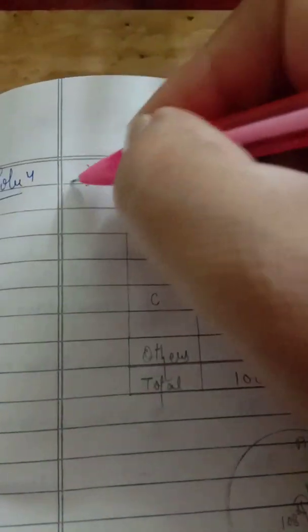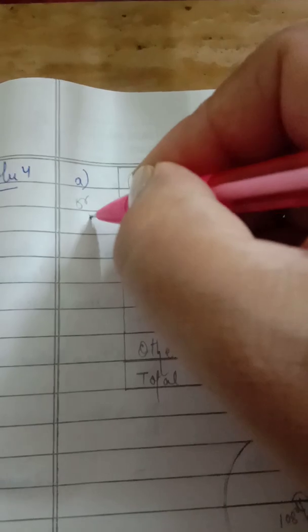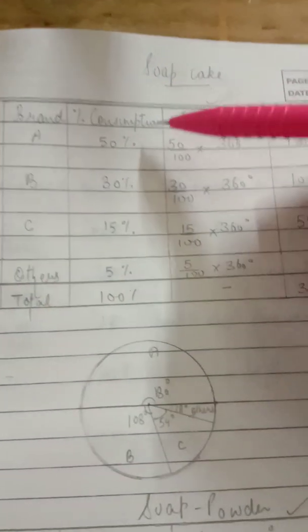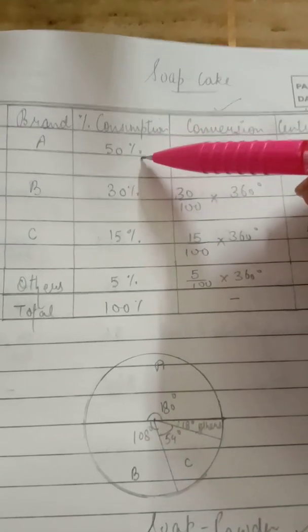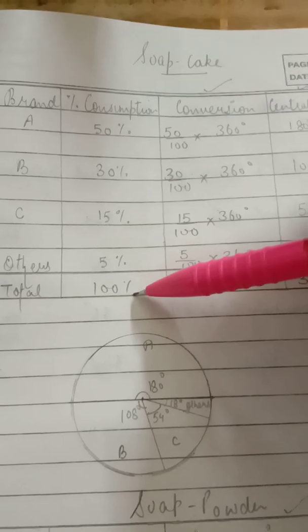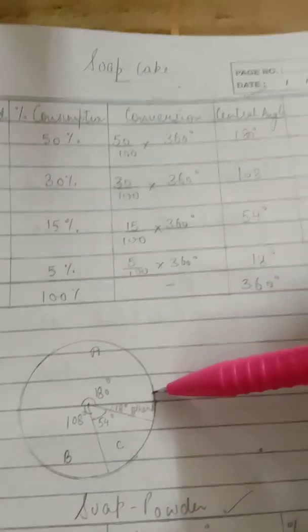Brand A, B, C, and others, the consumption is given: percentage 50%, 30%, 15%, and 5%, and the total of the percentage is 100%. Before we draw the pie graph, we have to convert it.